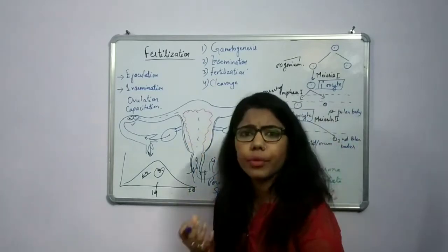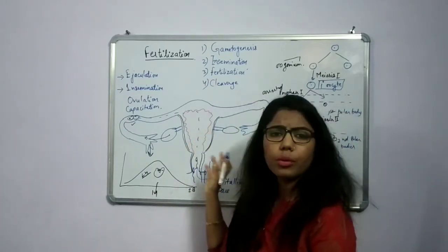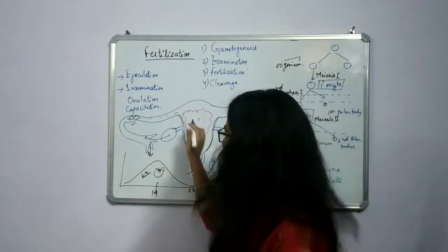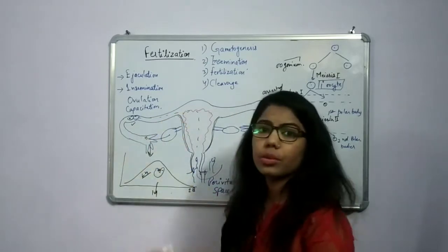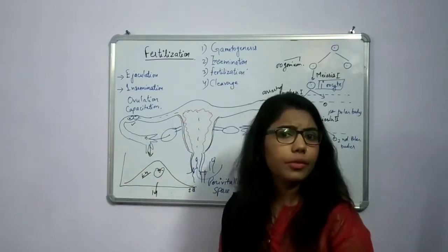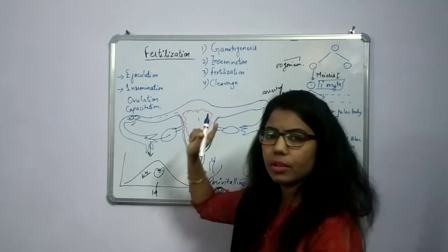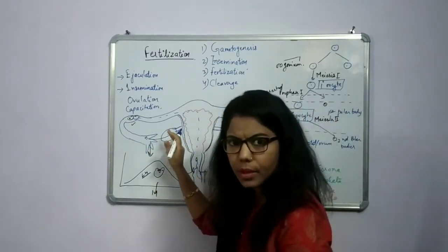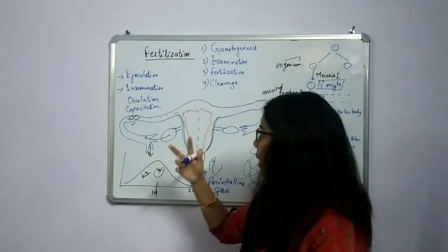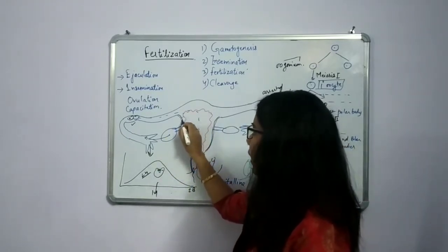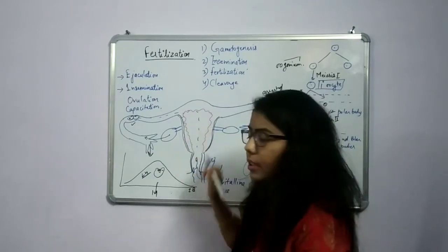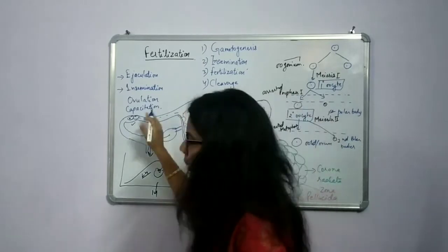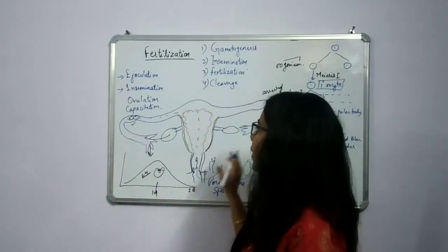Only about 100 to 150 sperms will reach up to the ovum. Again, due to other factors — the pH level of secretions of the vagina and uterus is one factor. The second factor is phagocytic cells present in the uterus, which engulf the sperms so they are not able to move up to the ovum. These are some different reasons.